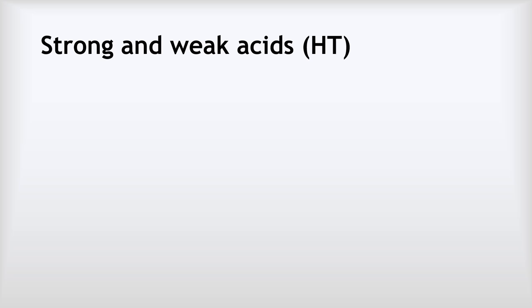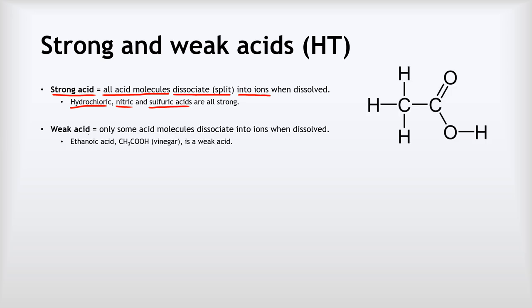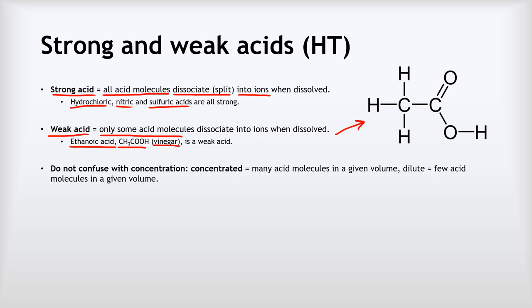Strong and weak acids — higher tier content. A strong acid is one where all of the acid molecules dissociate into ions when dissolved in water. Hydrochloric acid, nitric acid, and sulfuric acid are all strong acids. In a weak acid, only some molecules dissociate into ions. The key example you need to know is ethanoic acid — the substance that gives vinegar its sour taste — with formula CH₃COOH. When dissolved in water, only a few molecules actually dissociate; most remain as whole ethanoic acid molecules.